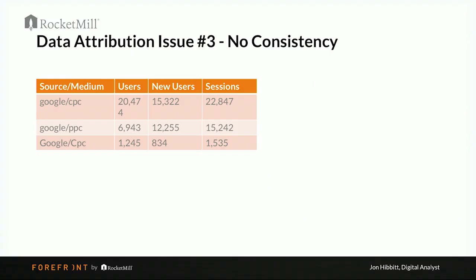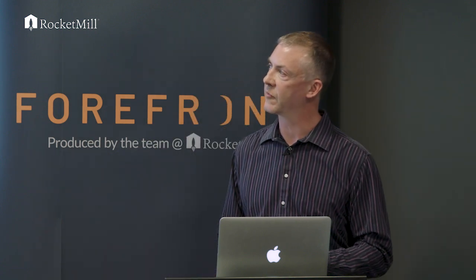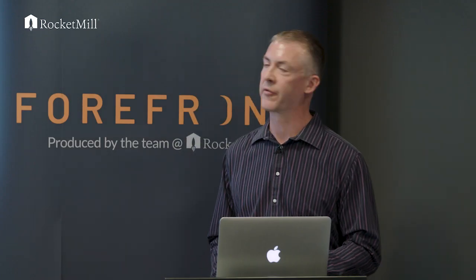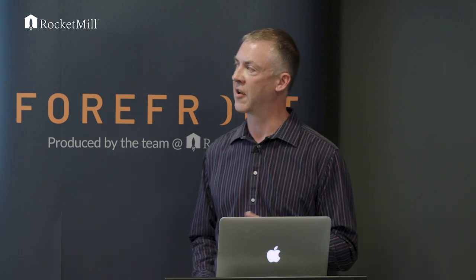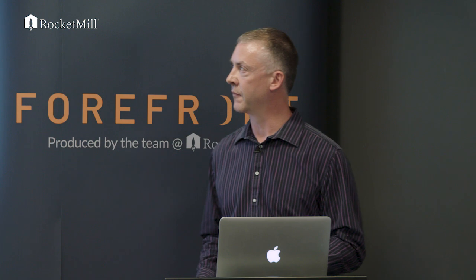Let's move into our third point, and this is about consistency — and this one is really prevalent. You might not see the first two, but you'll certainly come across this. Here we've got a source/medium of Google CPC, but someone else has decided to call it Google PPC, and then another team decided to use mixed casing. Unfortunately, that means instead of having everything in one single line, it's all been split across three rows — which is a nightmare for a data analyst, and this happens more frequently than you think. In another example, if multiple teams are working on the same campaign — Team A thinks the date should go at the beginning, Team B thinks the date should go at the end — that just means two rows, data split again, a big problem.